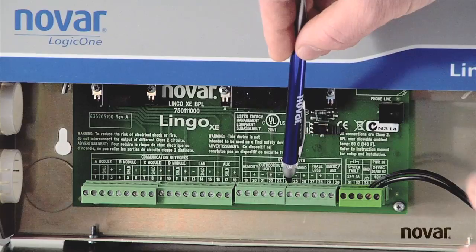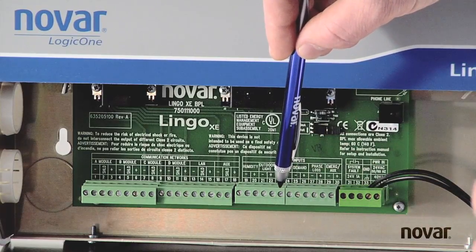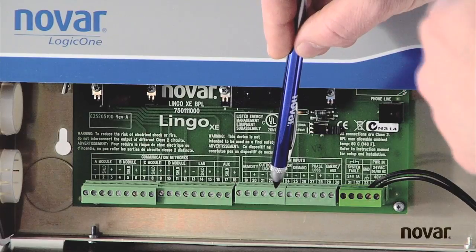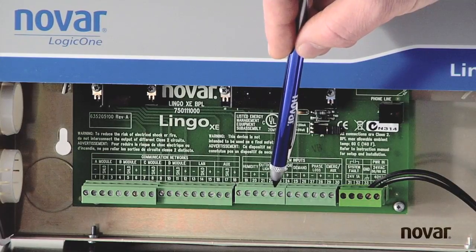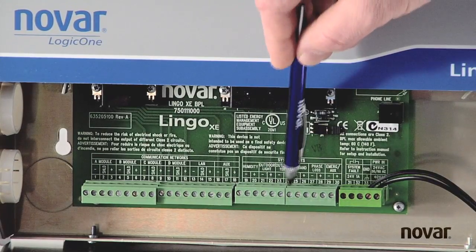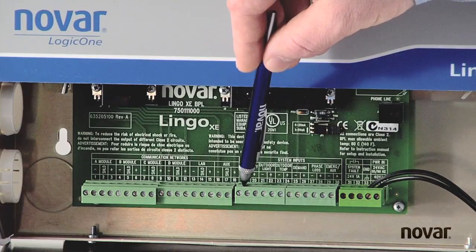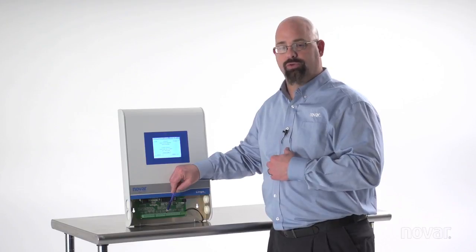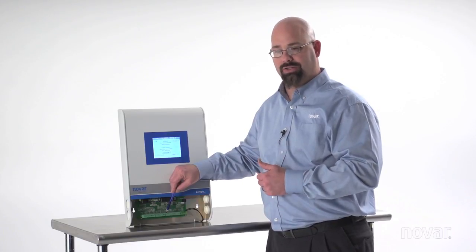To the left of that I've got three analog inputs. Again this Lingo XE's responsibility is to take 24 VAC and convert it to 24 volt DC. So each of these positive terminals here for my analog inputs is a 24 volt DC power source. We use that for our 4 to 20 milliamp loop powered sensor.